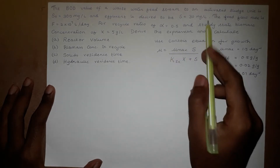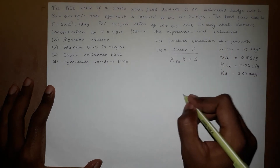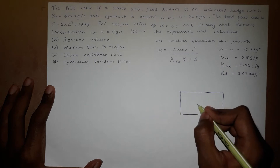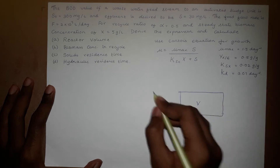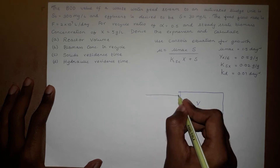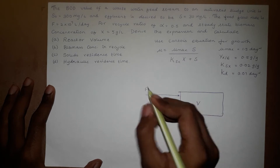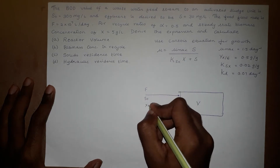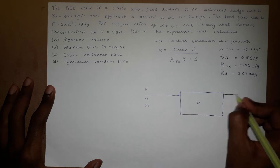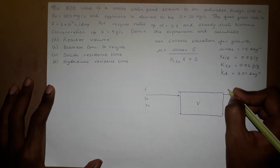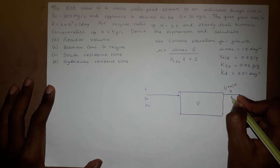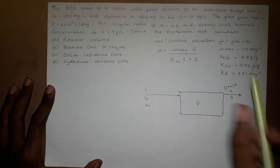First, we draw the activated sludge unit. It has a volume V with an input feed stream F, initial substrate concentration S0, and biomass concentration X0. The exit stream has a volumetric flow rate of (1 + alpha)·F, biomass concentration X, and the desired effluent substrate concentration S.